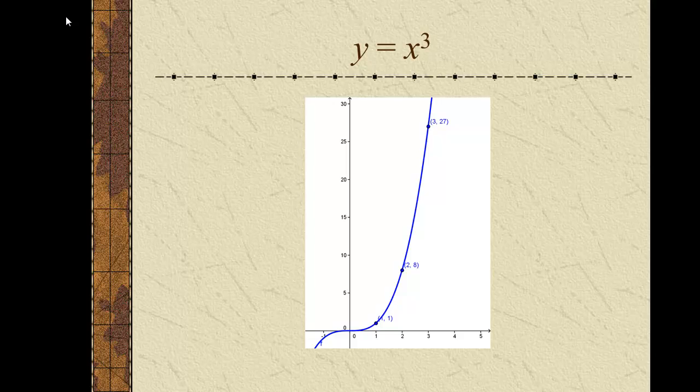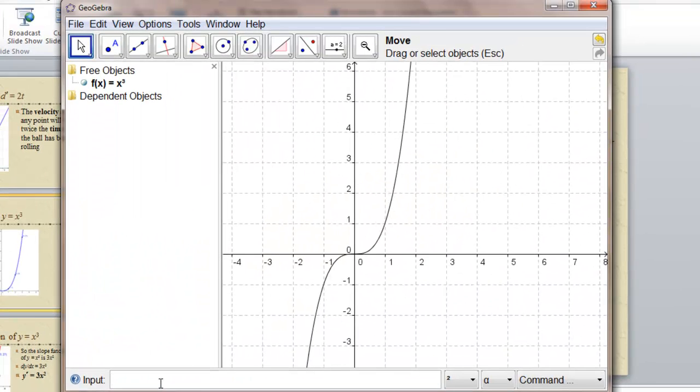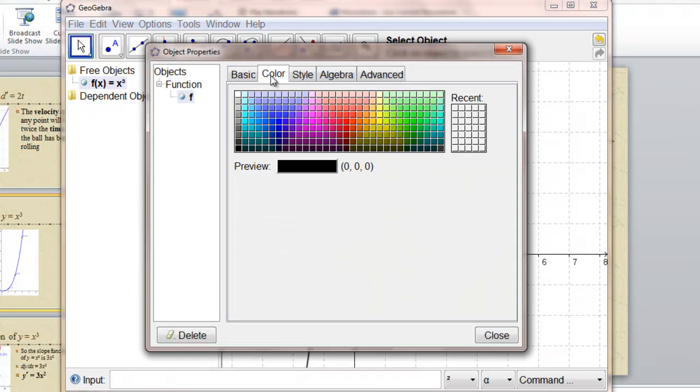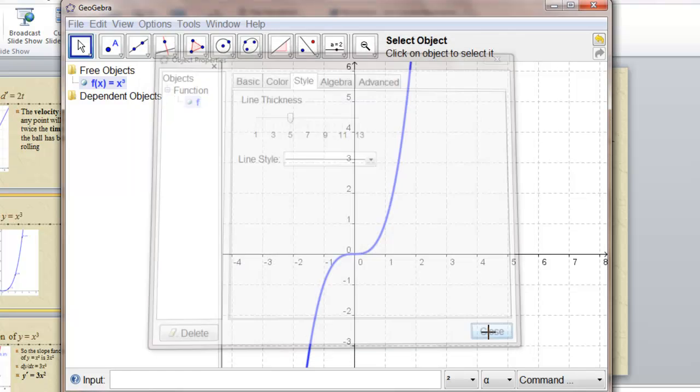So what about the function y equals x cubed? What we'll do this time is attach a tangent line to the curve, and we can see the slopes instantly. We'll graph x cubed. Let's change its color, make it blue, and make it thicker.